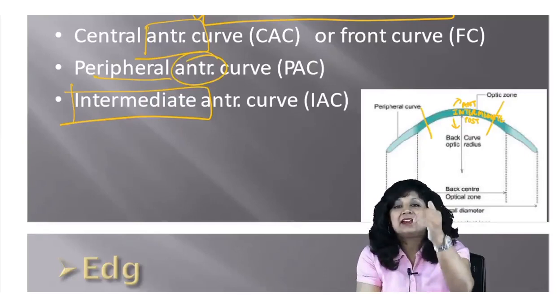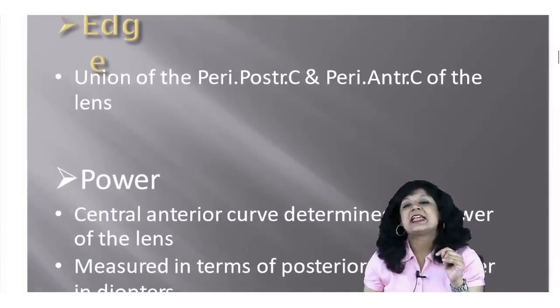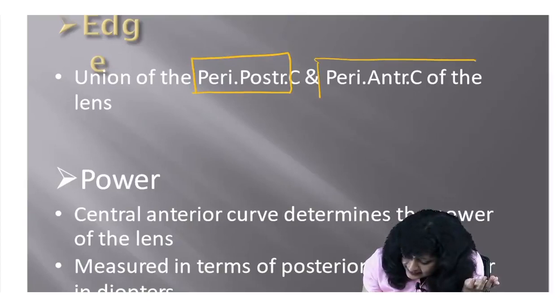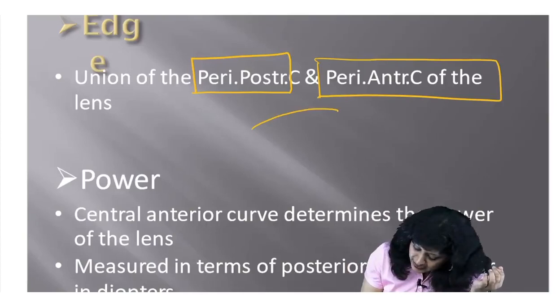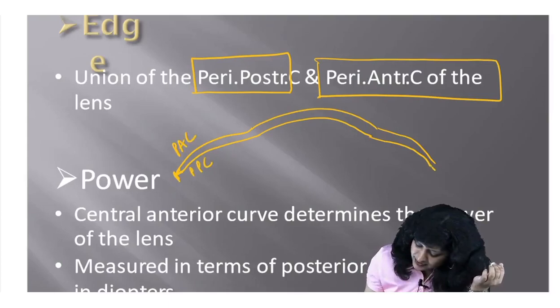Then we have a concept called the edge. Where the peripheral posterior curve and the peripheral anterior curve of the lens are joining — that is called the edge. So if you have the central area and then the peripheral area, where the peripheral anterior curve and the peripheral posterior curve combine on both sides, that junction is called the edge.